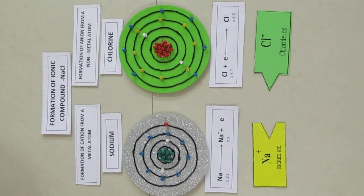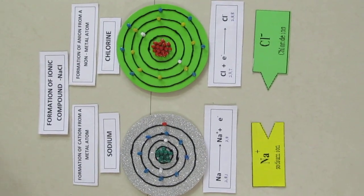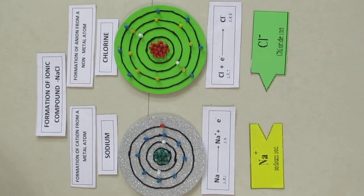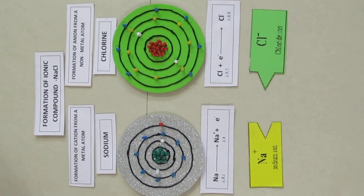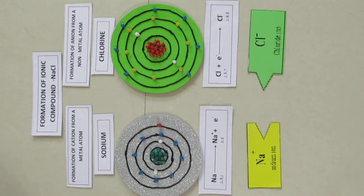Welcome. Today we are going to see the formation of ionic bond in NaCl. It involves three steps.